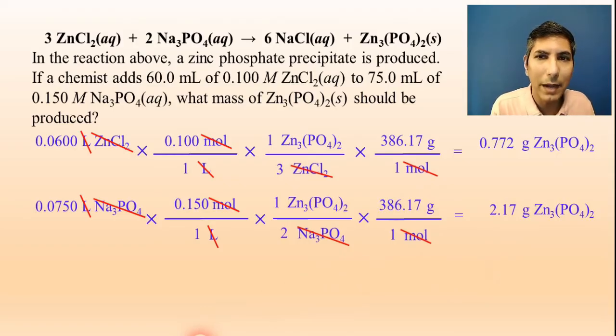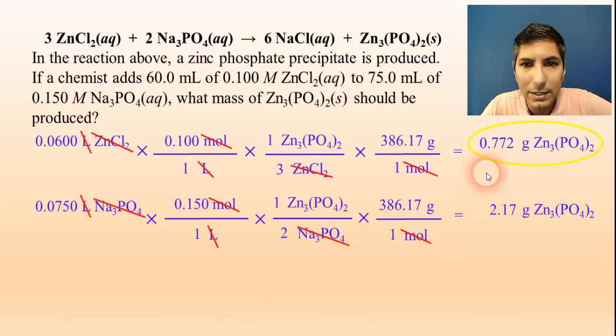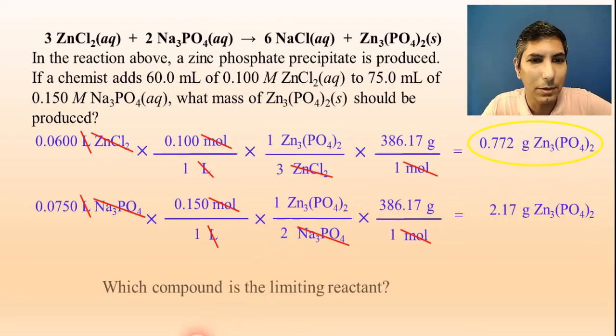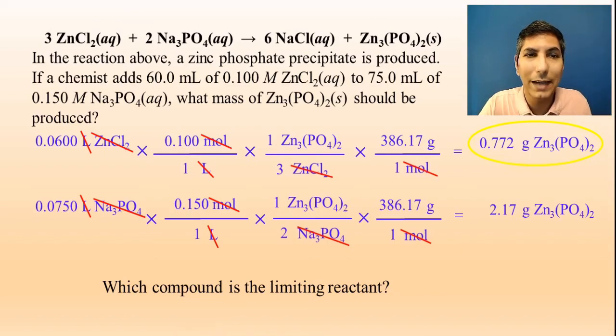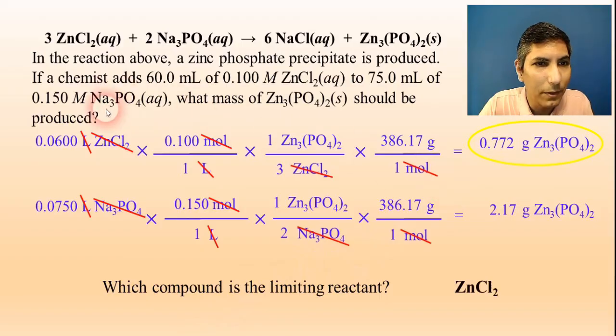Since this is a limiting reactant problem, which answer do I go with? It's always the lowest. So, the answer is the 0.772 grams of zinc phosphate. That's how much I would expect to be produced here. Which compound is the limiting reactant? Once again, it's the reactant that produces the smaller amount. So, that would be this zinc chloride right here.